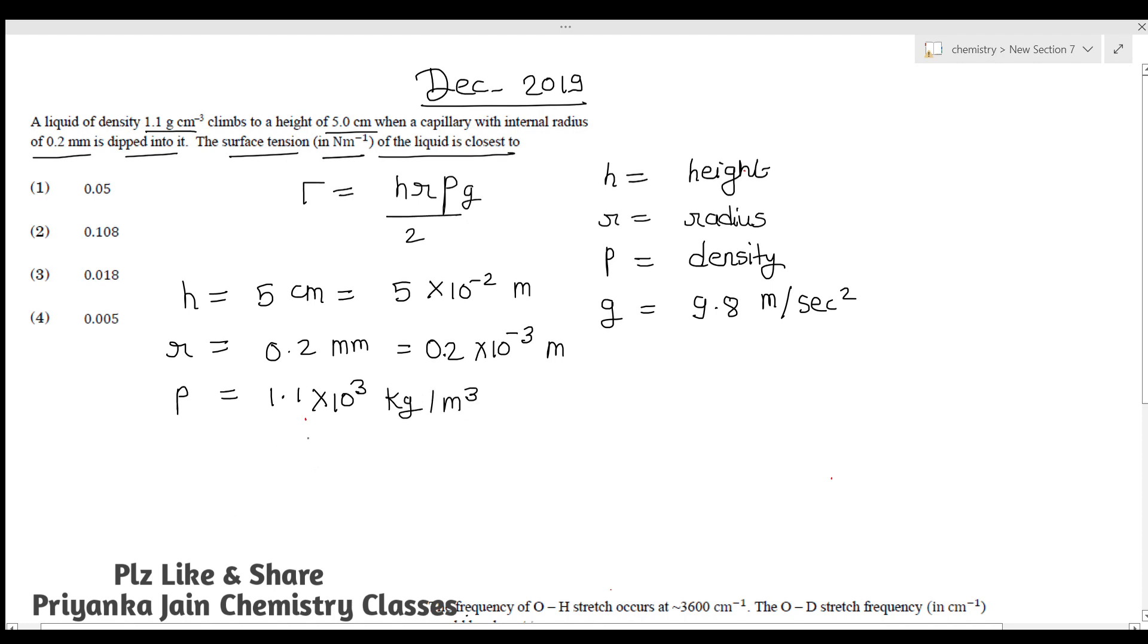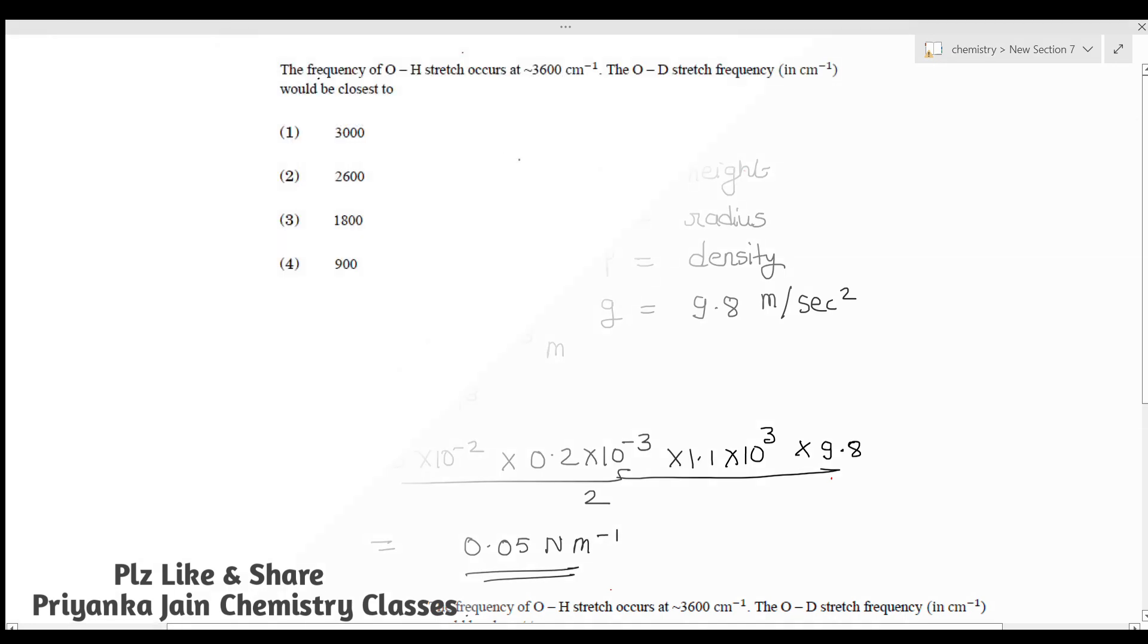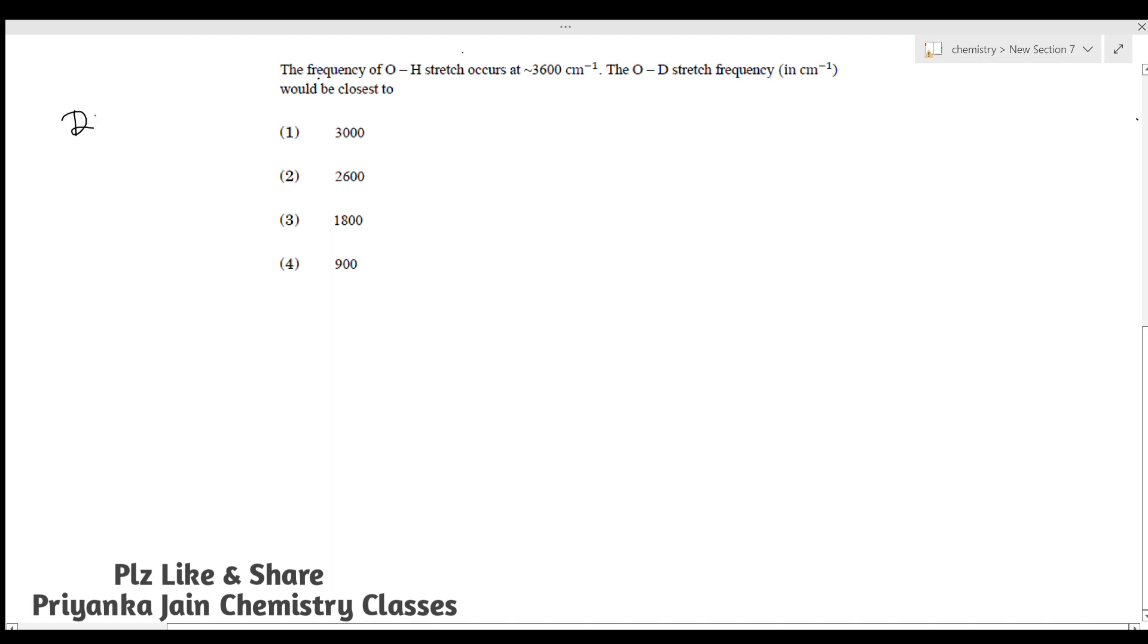Now put the values. You are getting: (5 × 10⁻² × 0.2 × 10⁻³ × 1.1 × 10³ × 9.8) / 2. This value equals 0.05 N/m. So this is your answer. Let's see the next question from December 2019 question paper.